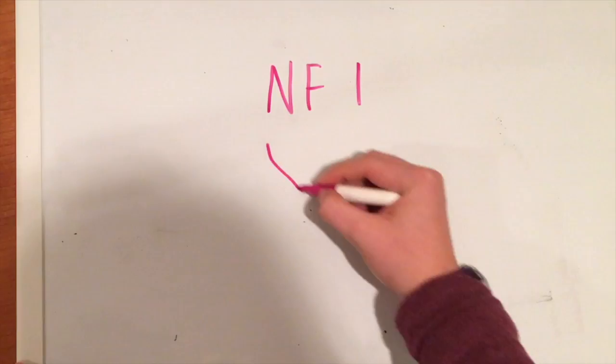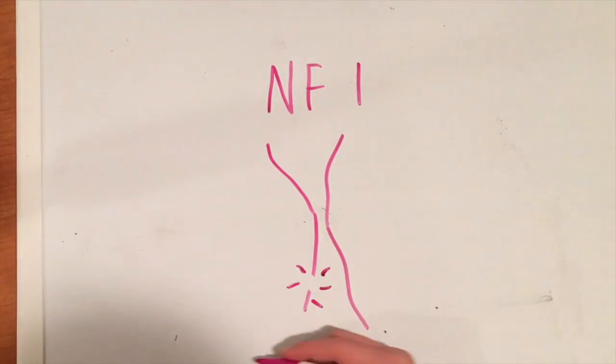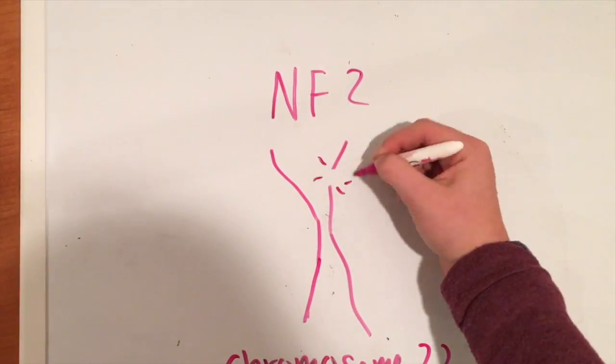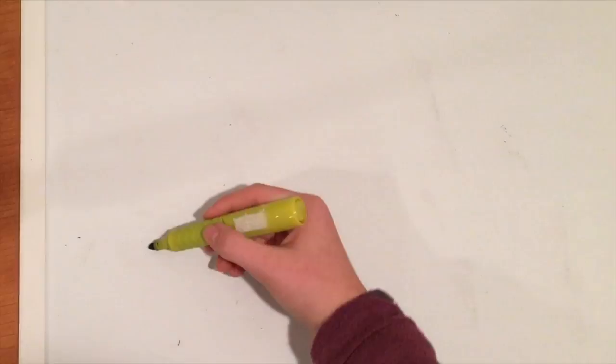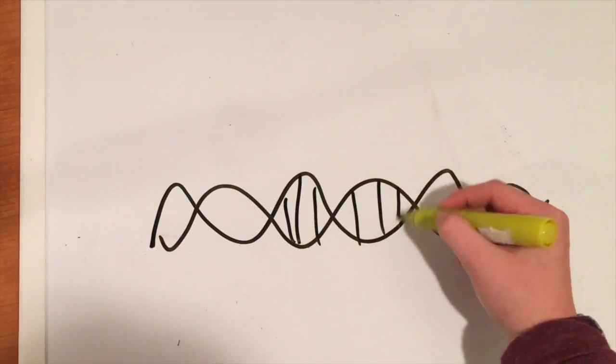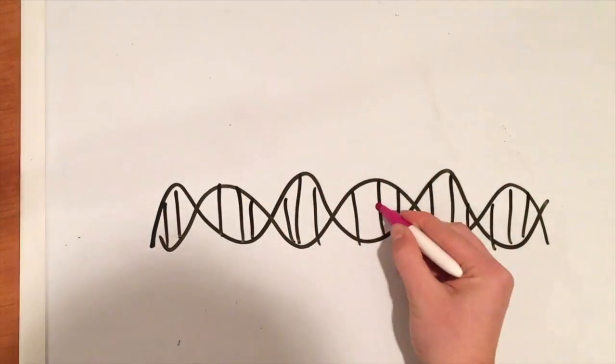NF1 affects a gene on chromosome 17 that controls cell division, and NF2 affects chromosome 22. However, nearly half of all cases come from random mutation.